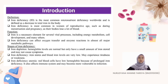During menstruation, iron deficiency is often caused by heavy menstrual bleeding, while during pregnancy, iron loss is due to the increase in blood volume and other factors, including not consuming enough iron, vitamin B12, or folic acid.